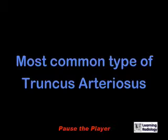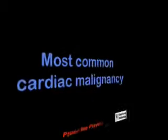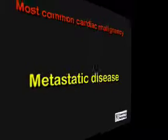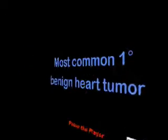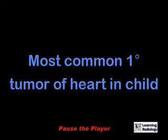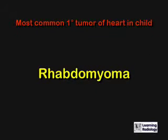What is the most common type of truncus arteriosus? What is the most common type of cardiac malignancy overall? Metastatic disease. What is the most common primary benign heart tumor? A myxoma. What is the most common primary tumor of the heart in a child? A rhabdomyoma.